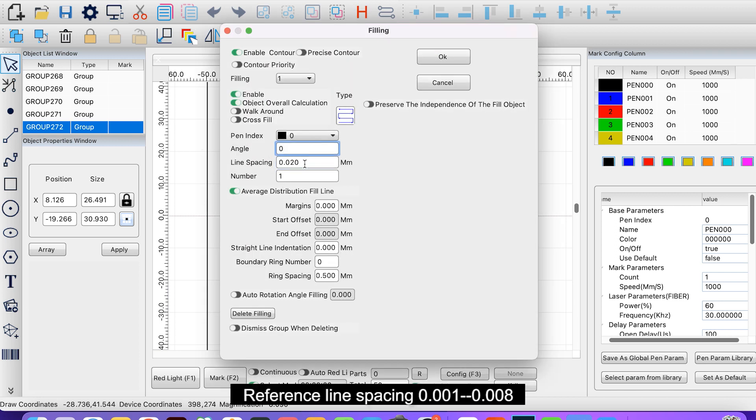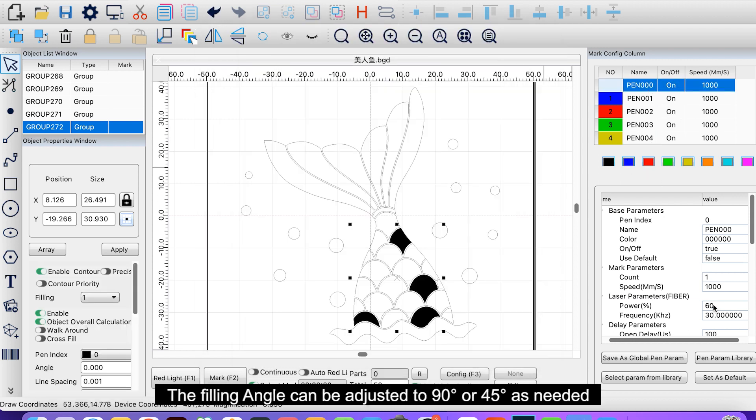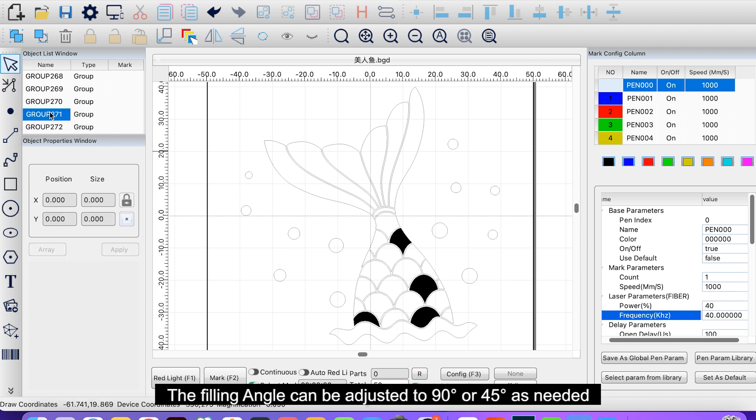Reference line space is 0.001 to 0.008. The filling angle can be adjusted to 90 degrees or 45 degrees as needed.